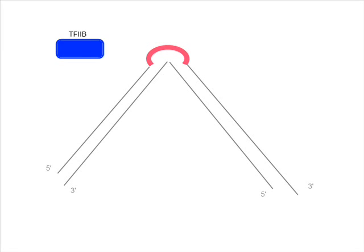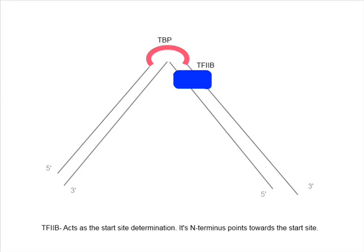Next, TF2B binds. TF2B is responsible for the start site determination. Its end terminus points towards the start site.